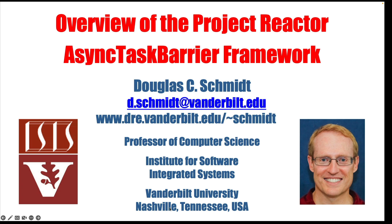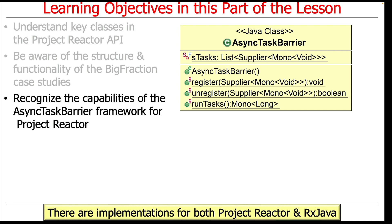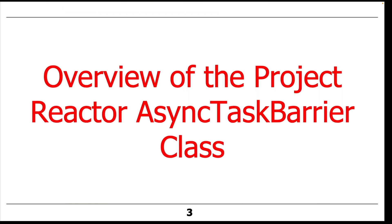We're now going to turn our attention to an interesting little framework called the Async Task Barrier Framework, which is going to be applied throughout all the case studies we're going to look at with Project Reactor. We're just going to take a quick look at how you use it now, and then we're going to come back much later after we've talked about Mono and Flux operators and look at how it's implemented. I want to show you what service it provides because it's going to be used over and over again throughout all the examples we look at.